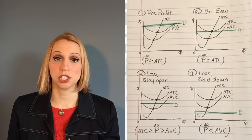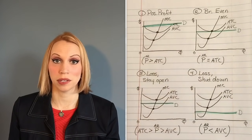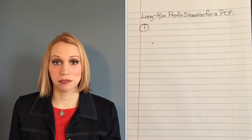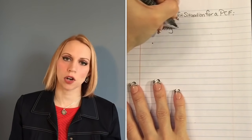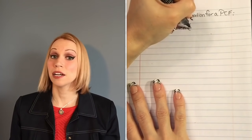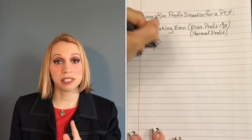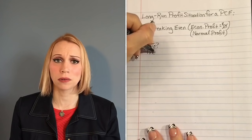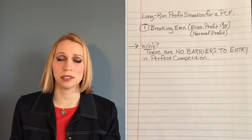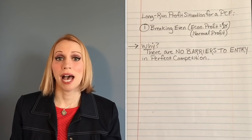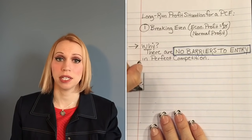To figure out your short-run profit situation on a graph, all you really need to look at is the location of your demand curve. Now let's talk about perfectly competitive firms in the long run. The long run is a longer period of time where no resources are fixed — everything is variable, everything can change. For perfectly competitive firms, there is only one situation they will ever be in in the long run, and that is breaking even — economic profit equals zero. Why? Breaking even doesn't mean they're starving; it means they're doing just as well here as they would using resources some other way.